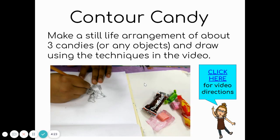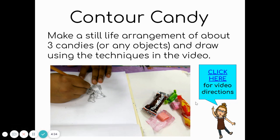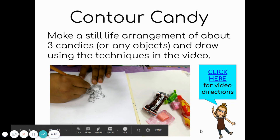The last option is to make a still life. The example linked here is of candy, and there's a great video that talks you through how to create a still life and draw it using contour lines. If you don't have candy, you might have other objects that would work just as well. Click the link for video directions.